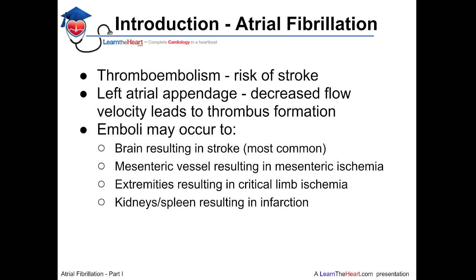Frequently, on a transesophageal echo, you may see what's called spontaneous echo contrast from this rouleau formation. This can eventually result in thrombus formation, and if the thrombus embolizes, it most frequently goes to the brain, where it results in stroke. Stroke from a cardioembolic source, specifically from atrial fibrillation, is the third leading cause of stroke in the United States, behind ischemic strokes and hemorrhagic strokes. On rare occasion, thromboembolism can occur from the left atrial appendage to the mesenteric vessels resulting in mesenteric ischemia, to the extremities resulting in critical limb ischemia, or to the kidneys and spleen resulting in infarction in those organs.